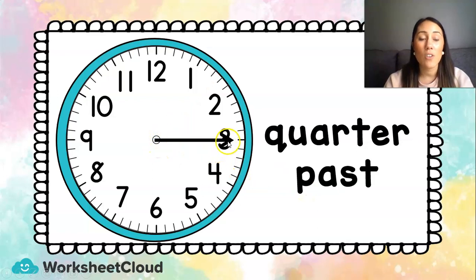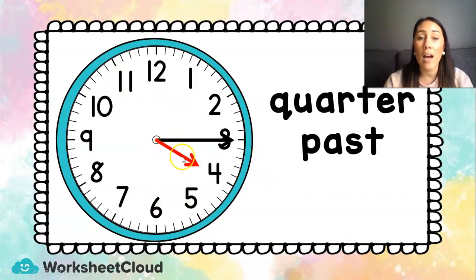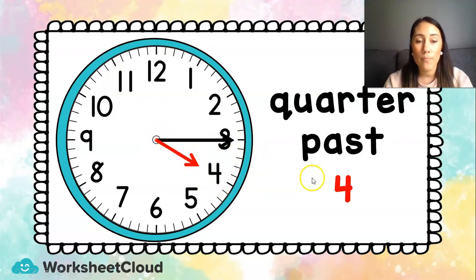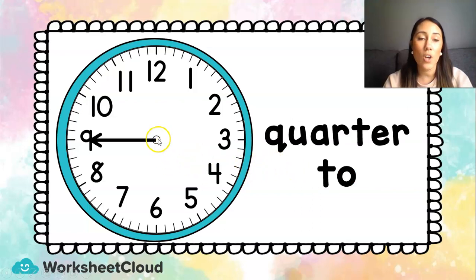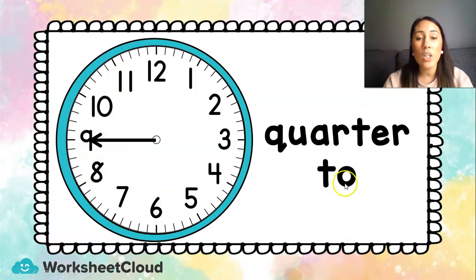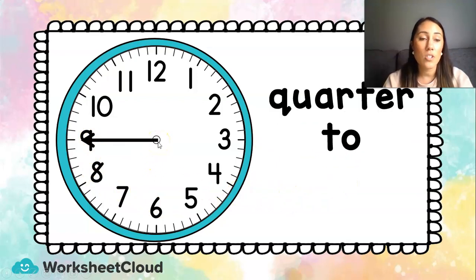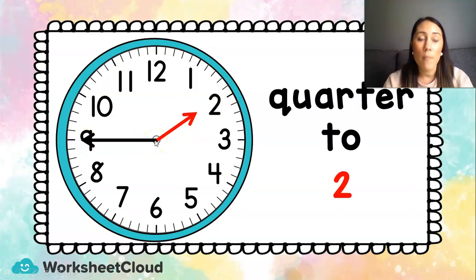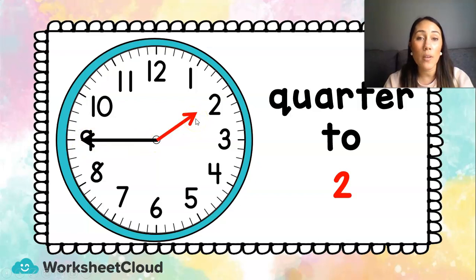When the long hand is on the 3, the name we give it is quarter past. Quarter past tells us the minute, and the short hand tells us the hour. If the short hand is on the 4, we say it is quarter past 4. And when the long hand has ticked all the way around to the 9, we say it is quarter to something. The short hand tells me what it is quarter to — if the short hand is on or just before the 2, it is quarter to 2. Remember, always look at the long hand first, then the short hand, and that tells you the order of how to say the time.